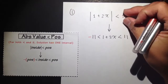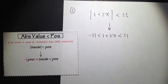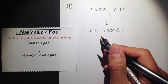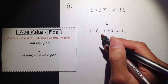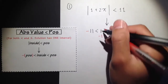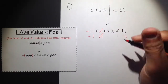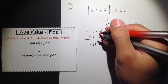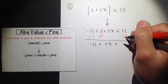Once we write the inequality like this, we solve it the usual way. Our goal is to isolate x, but here x is in the middle. So we have to do the same procedure to the left hand side, the middle, and the right hand side. I have 1 plus 2x, so I need to first subtract 1 on all three sides. Negative 11 minus 1 is negative 12. Maintain the inequality signs. Bring down the 2x. And 11 minus 1 is 10.